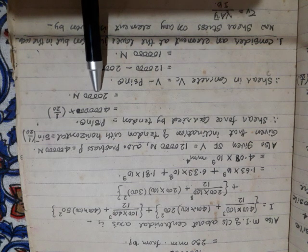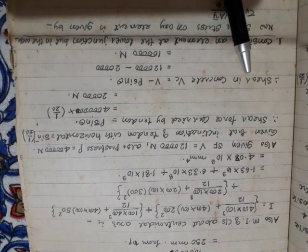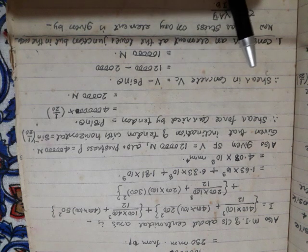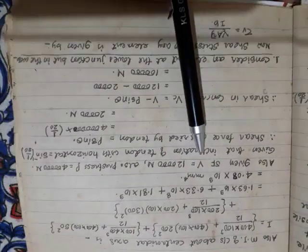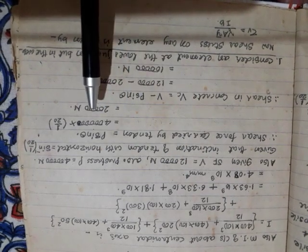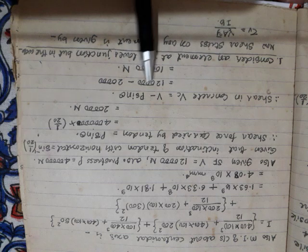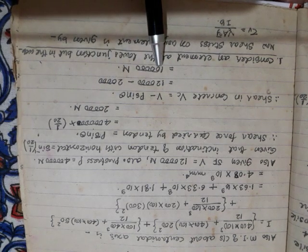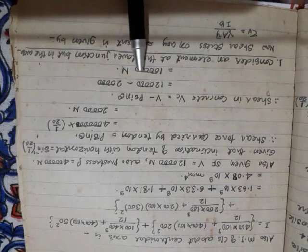The effective shear force in the concrete, Vc, is given by: Vc = V − P·sinθ. The total shear force at the cross-section is 1,20,000 N, and P·sinθ is 20,000 N. Therefore, Vc = 1,20,000 − 20,000 = 1,00,000 Newtons.